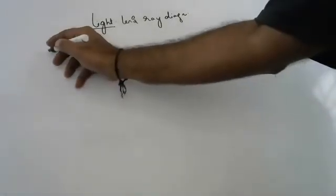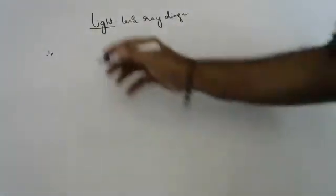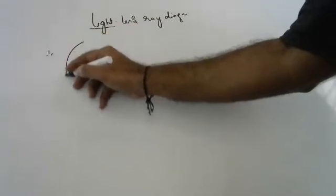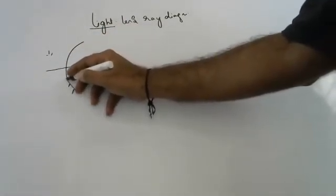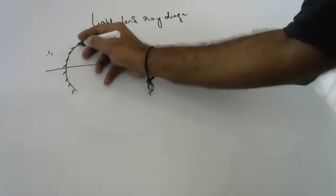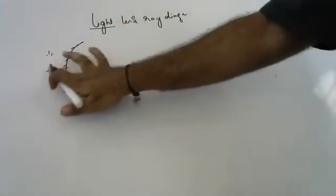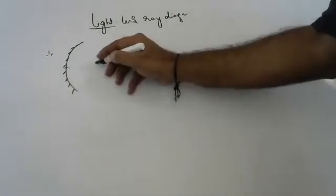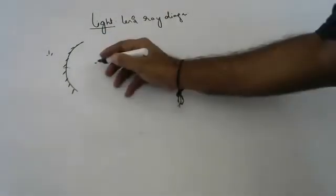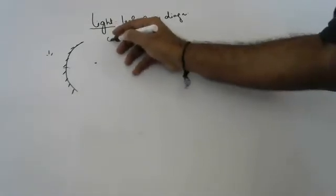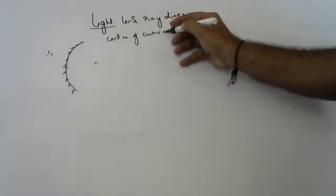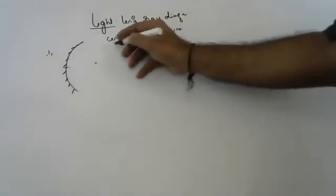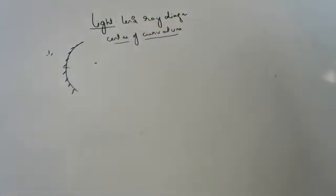In this class we will cover some basic terminology. Suppose this is a mirror — this is called the center of curvature. Try to understand what the center of curvature is.